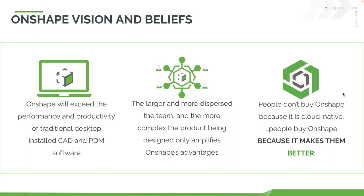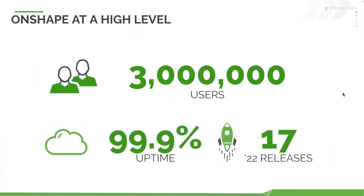At a very high level, we have about 3 million users, of which something like a million are active. There is 99.9% uptime. Obviously if you're a cloud product, uptime is crucial — any little disruption is detrimental to the business of our users, so we want to ensure that number is as close to 100% as possible. In 2022 we had 17 releases; we operate on three-week sprints. There is something to be said about the rate at which we're delivering new capabilities. We'll talk more about how those are delivered with little disruption to end users.